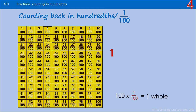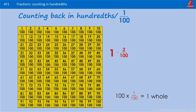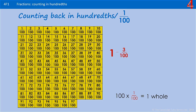Let's have a look at counting back in hundredths. If we have a whole one and we take away one hundredth, counting back one hundredth from a whole one, you can see we have 99 hundredths left. If we count back two hundredths, we have 98 hundredths left. And if we count back three hundredths, we have 97 hundredths.